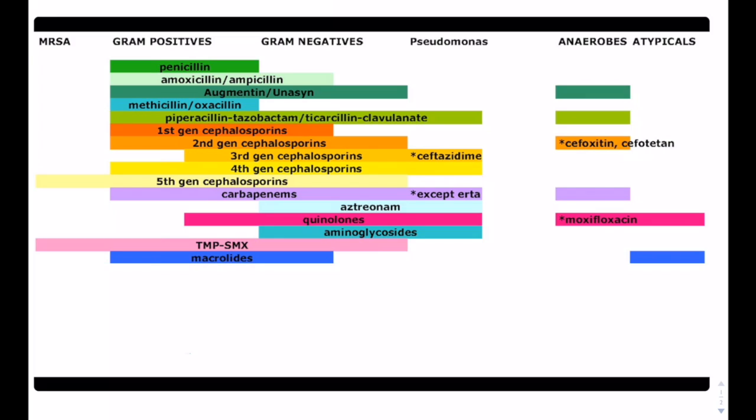We have the aminoglycosides that cover gram negatives and pseudomonas. We have the Bactrim that covers MRSA, gram positives, and gram negatives. We have the macrolides. It covers gram positives, gram negatives, and also atypicals.